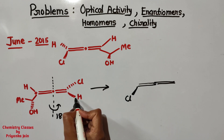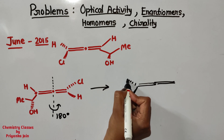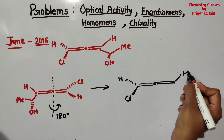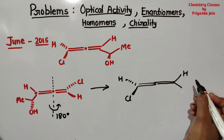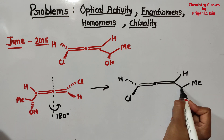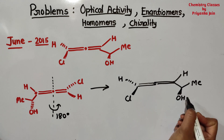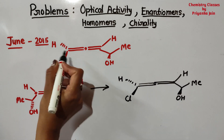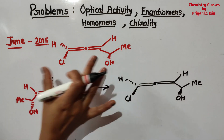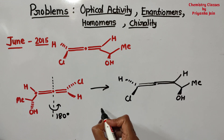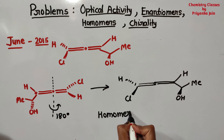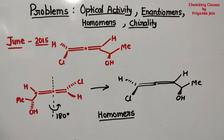When rotating by 180 degrees about Y, the groups below the plane go above the plane and the group above goes below. So this chlorine will now go above the plane, this will go below, and this Me group moves accordingly. Now you can match the two structures — they are identical. We can superimpose one onto the other, so these are homomers, not enantiomers. This compound is optically inactive.